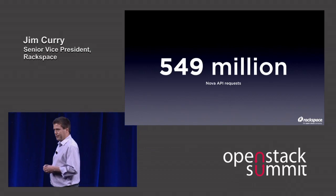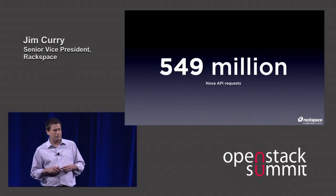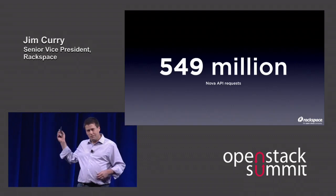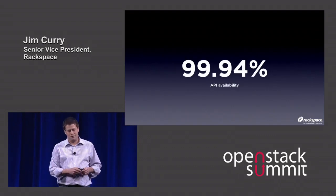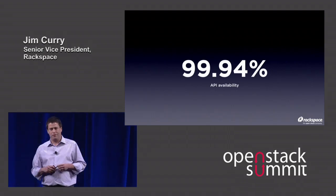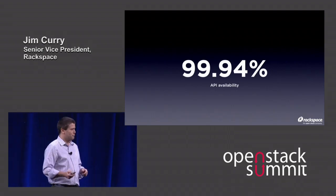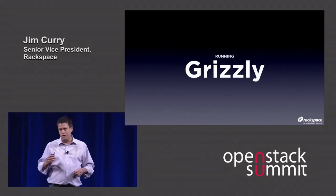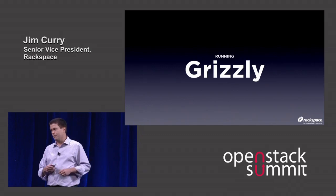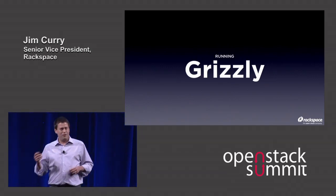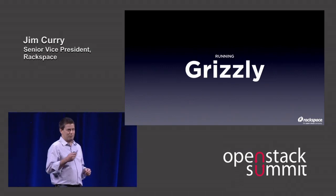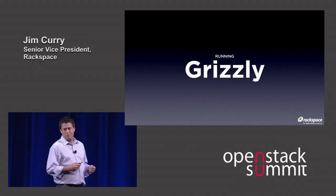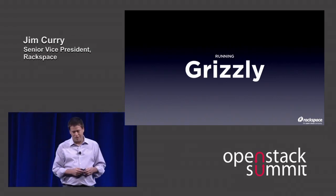Since launching Nova OpenStack compute in our public cloud in August, we've had over 549 million API requests — pretty good usage. It's had 99.94% availability during that time, which is pretty reliable. As we've been working with the community to build Grizzly, we've been deploying it near real time as well. We wouldn't do this in an OpenStack-based cloud running real customer workloads unless it actually worked. In short, what you guys are doing is working well, and we're very proud to be part of that community effort.